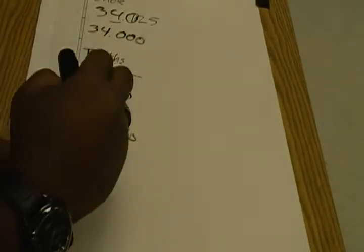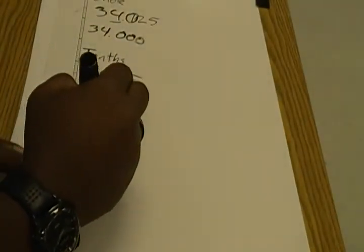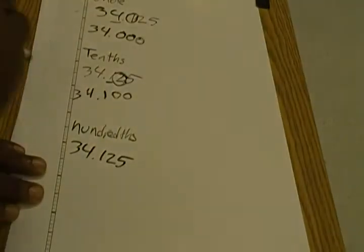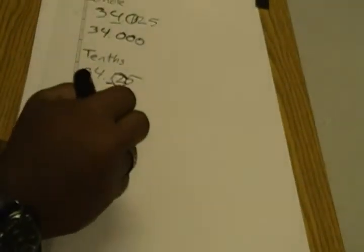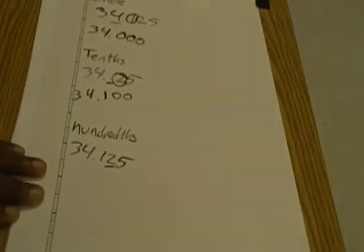For the hundredths place, same number once again. The hundredths place is the two—remember, it's two decimal spaces over.